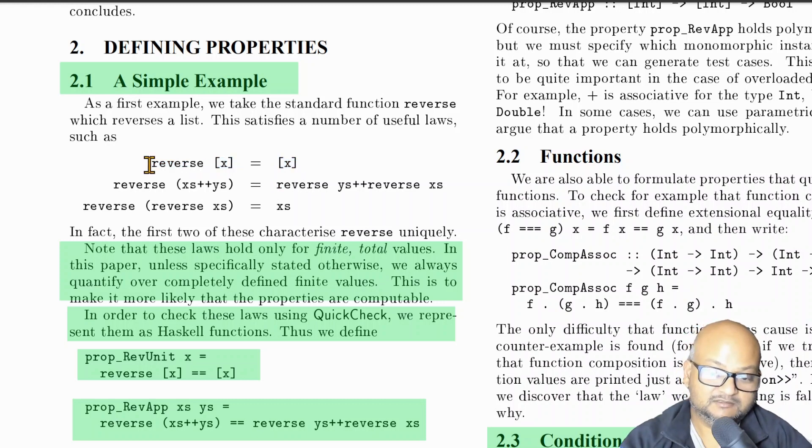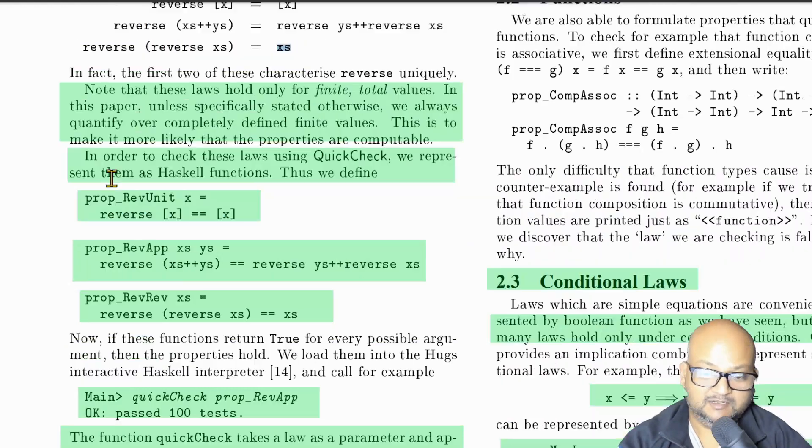Now, irrespective of the implementation, we know that any list reversal function must satisfy these three properties. The first one is that reversing a list with a single element gives you the same list. The second one is that reversing the concatenation of two lists gives you the concatenation of the reverse of those two lists, but in the reverse order. And the third property is that reversing a list twice obviously gives you back the original list. The key idea in QuickCheck is to then express these properties simply as Haskell functions. And as you can see here, you can quite literally transcribe them into Haskell code for each of those properties.